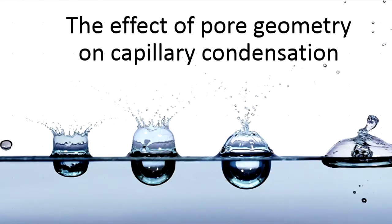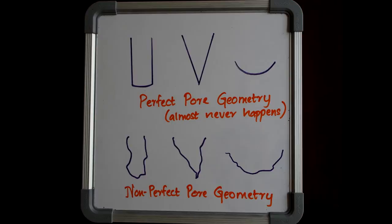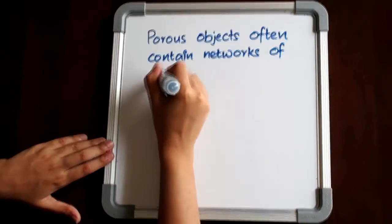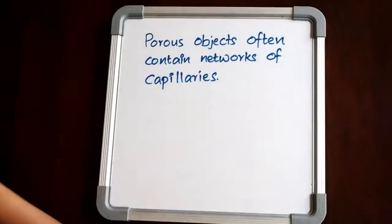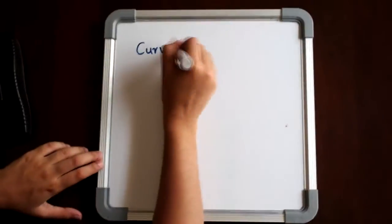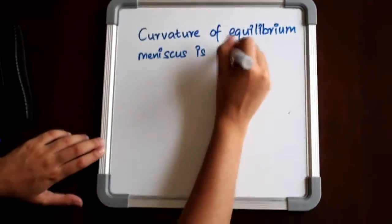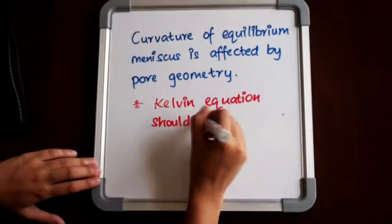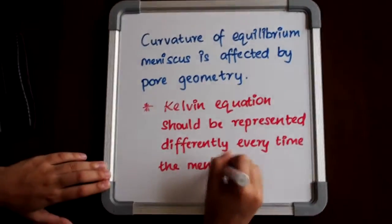Next, we'll be explaining the effect of pore geometry on capillary condensation. In both natural and synthetic porous structures, the geometry of pores and capillaries is almost never perfectly cylindrical. Porous objects often contain networks of capillaries, for example, paper, untreated wood, and sponge. Since the curvature of equilibrium meniscus is affected by pore geometry, the Kelvin equation should be represented differently every time the meniscus changes.